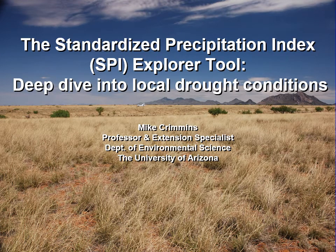Hello, this is Mike Crimmins from the University of Arizona. I'm an extension specialist in climate science, focusing on agriculture and natural resources management. I've been working with rangeland managers in the southwest for the past 15 years.